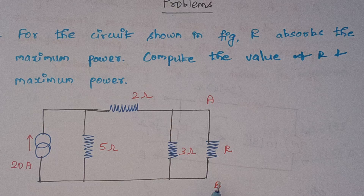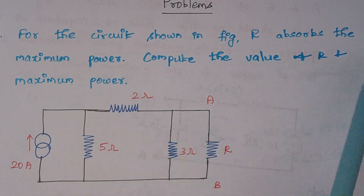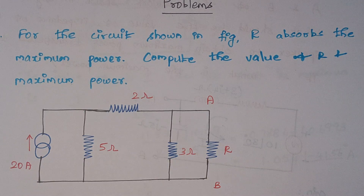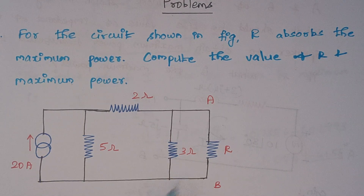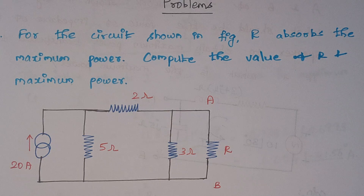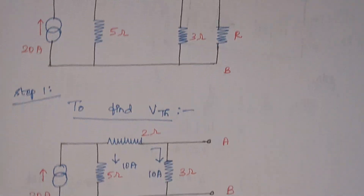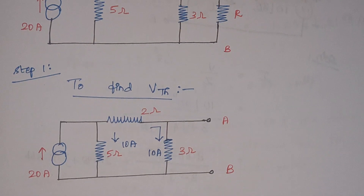Here is the given circuit diagram. We need to calculate the value of R and the maximum power consumed by R. So before that we have to calculate the value of R, then only we can easily calculate the power. The first step is we have to find V_Thevenin, that is Thevenin's voltage. So how to find V_Thevenin? We have to remove the load resistance which is connected across the terminals.